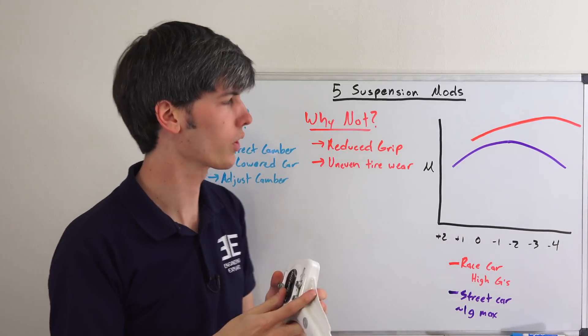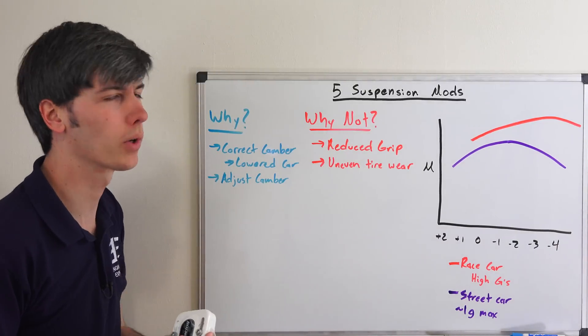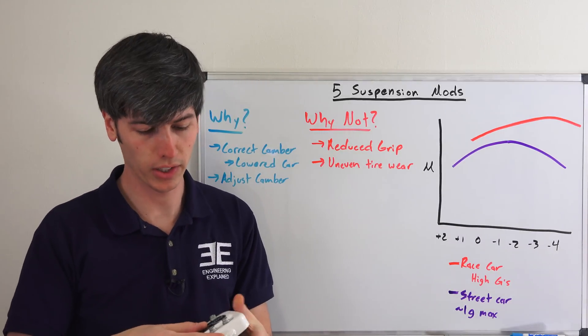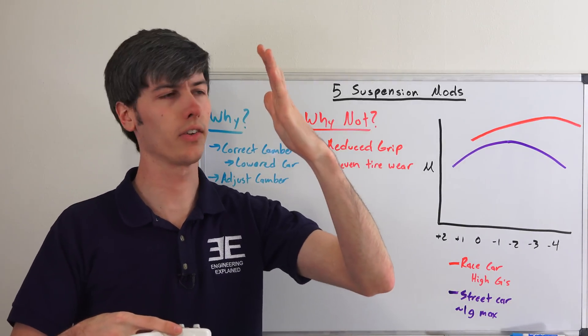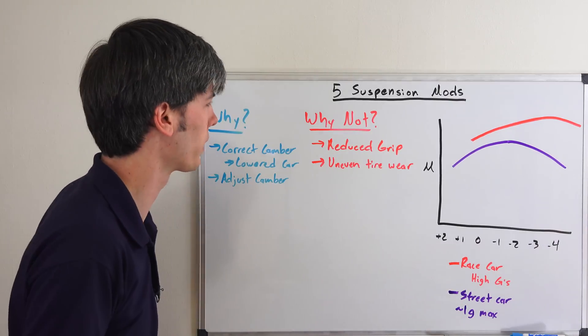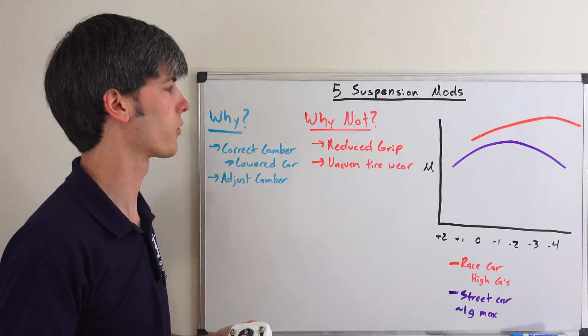A lot of negative camber is actually a bad thing. You're going to reduce the amount of grip you have and you're also going to have uneven tire wear, and it looks silly while you're doing it. If you do see excessive negative camber, basically if it's visible, it's probably excessive.